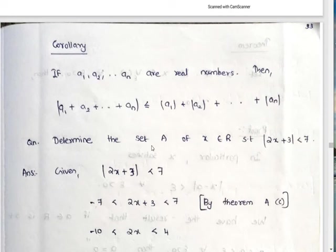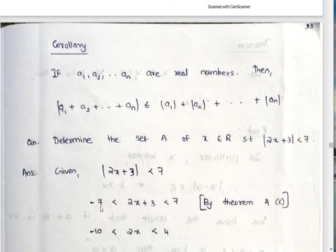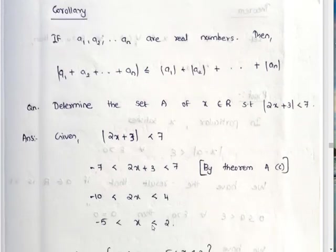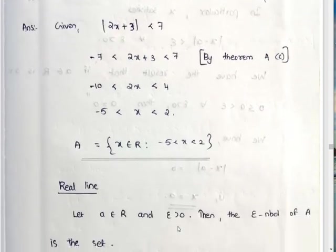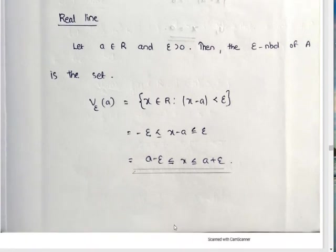Example: determine the set A of x element of R such that mod of 2x plus 3 less than 7. Using the theorem, minus 7 less than 2x plus 3 less than 7. Subtract 3: minus 10 less than 2x less than 4. Divide by 2: minus 5 less than x less than 2. So the set A is the open interval minus 5 to 2 on the real line.